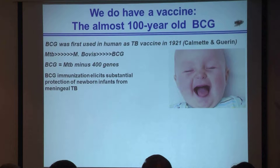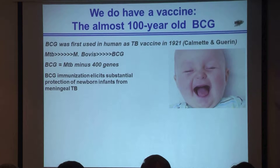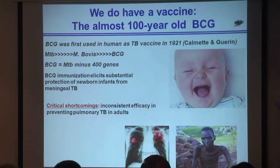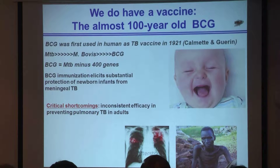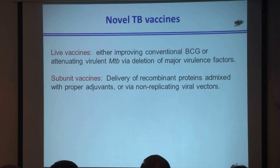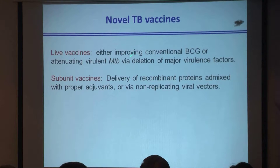BCG is a wonderful vaccine and has helped protect newborns from disseminated tuberculosis, especially meningeal TB. Its limitation is that it doesn't protect very efficiently against pulmonary TB in adults, which is one of the most frequent TB presentations. There is a lot of development in this area, and there are two main approaches: either live vaccines — improving the current BCG or attenuating virulent MTB via deletion of major virulence factors — or subunit vaccines.